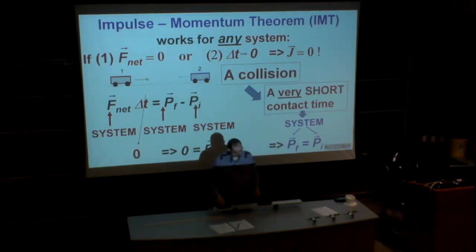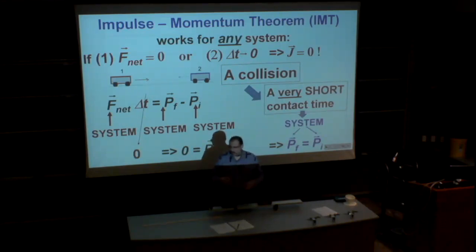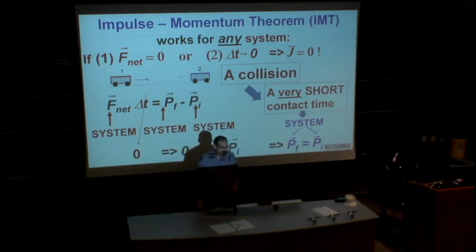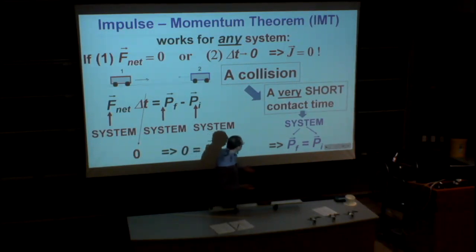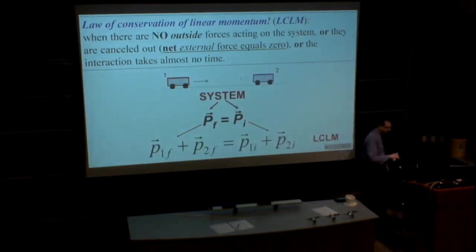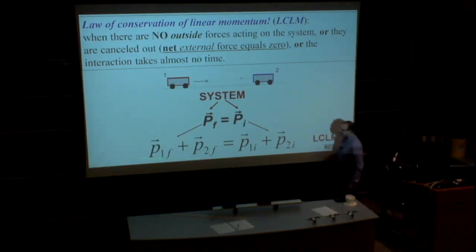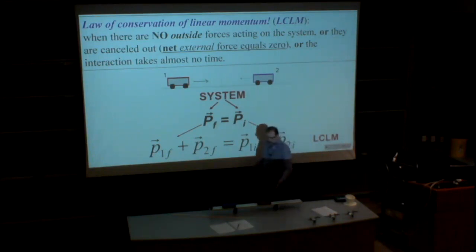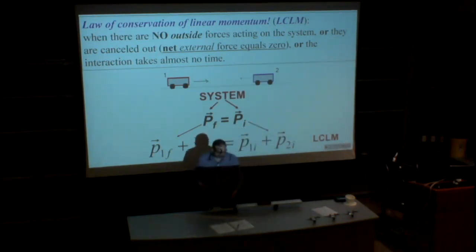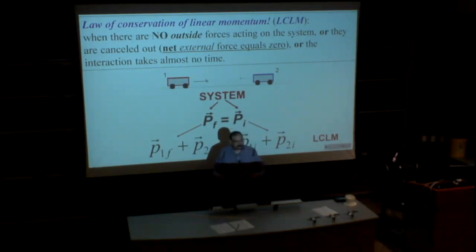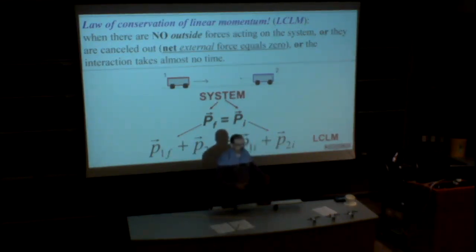Even if the net force is not exactly zero sometimes, if a collision happens very quickly, the impulse of the force is still practically zero. So in all those cases, we can assume that the total linear momentum remains constant. Constant means the same before and after the collision. For two objects, the total linear momentum of the system equals the sum of individual linear momenta, and this sum must remain constant.